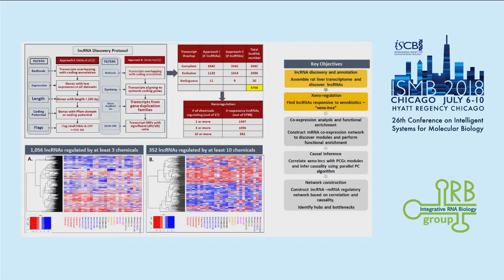The first thing we did was to discover lncRNAs. We used two different protocols: one developed in the lab, purely based on known lncRNA features such as length and expression; and another tool from the Broad Institute called Slinky, which uses a syntenic identification approach. Combining both methods, we came up with 5,798 candidate lncRNAs, out of which 1,447 were responding to one or more xenobiotics, with their modes of action represented in colors.